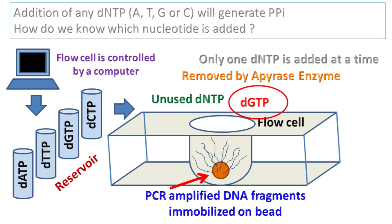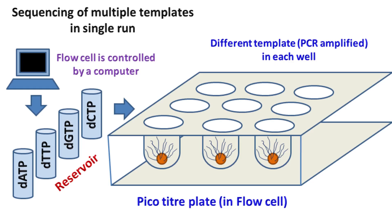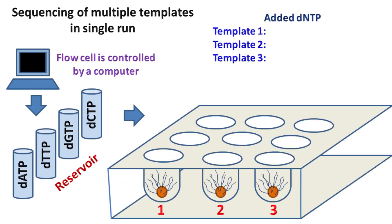More advanced pyrosequencing also allows sequencing of different templates in a single run. For this purpose, beads having different template DNA are kept in a picotiter plate. All the template DNAs are PCR-amplified and immobilized on individual beads. Each well of the picotiter plate will have a single bead with many copies of the template DNA. The picotiter plate is then kept in a flow cell while the reagents are added and flushed.